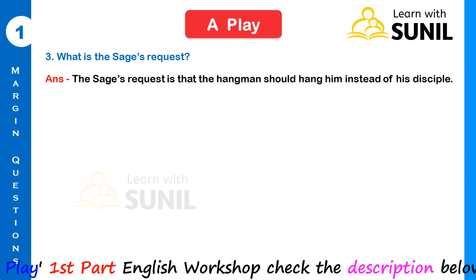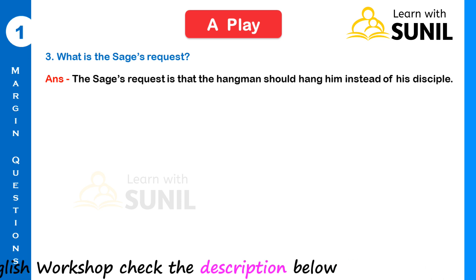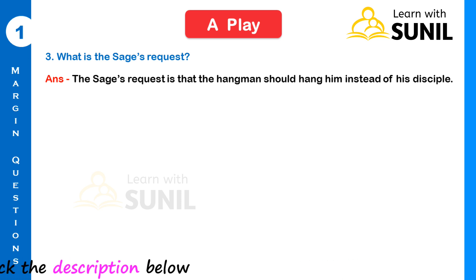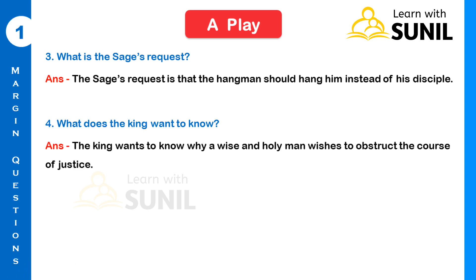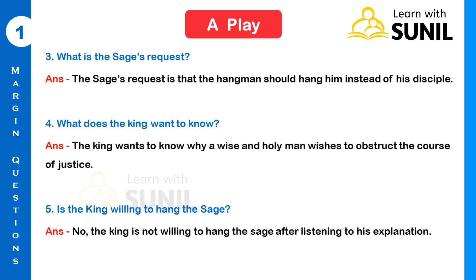Third question: What is the sage's request? Answer: The sage's request is that the hangman should hang him instead of his disciple. Fourth question: What does the king want to know? Answer: The king wants to know why a wise and holy man wishes to obstruct the course of justice.